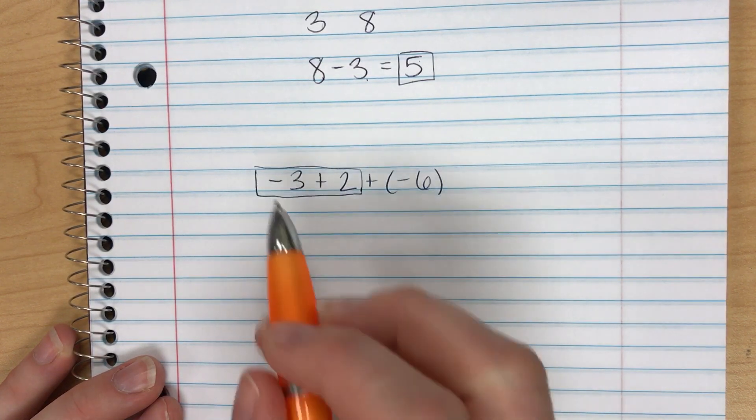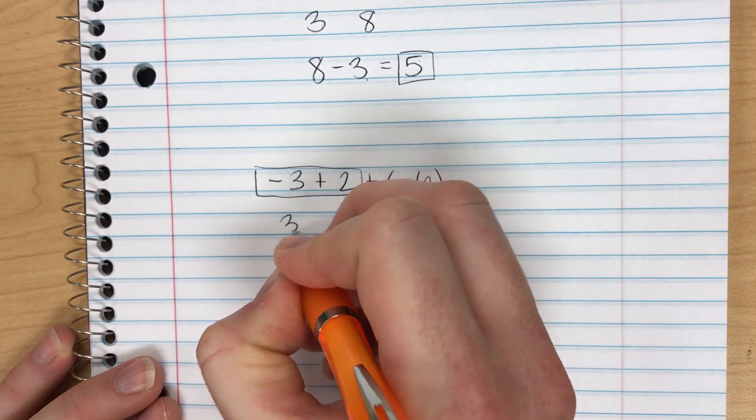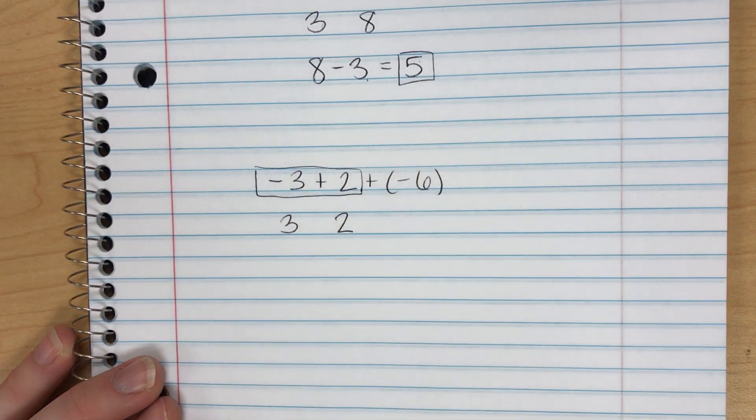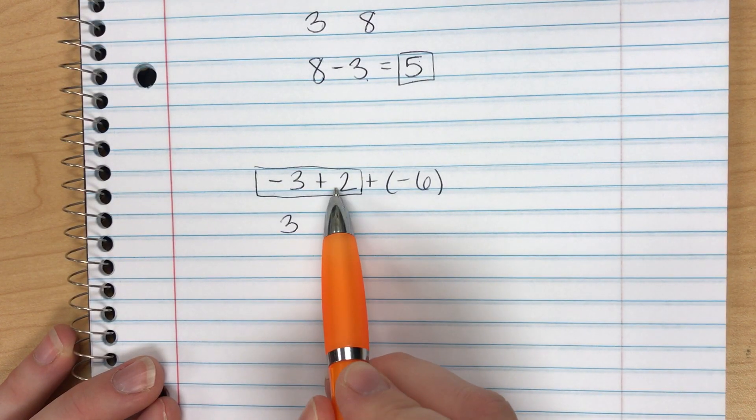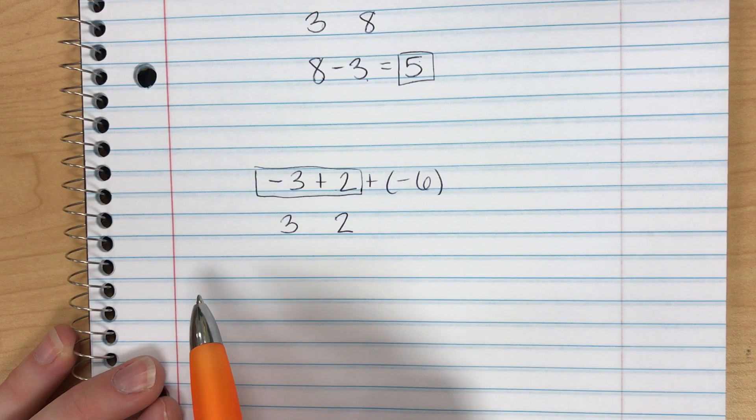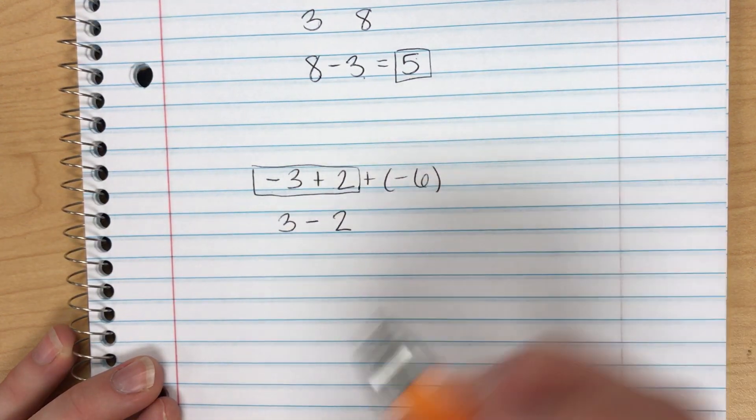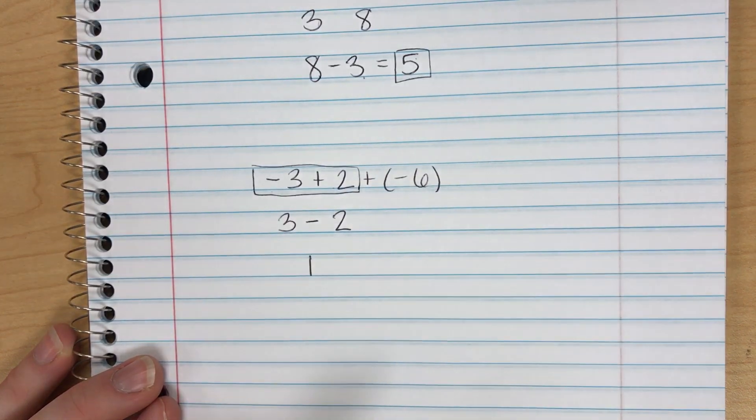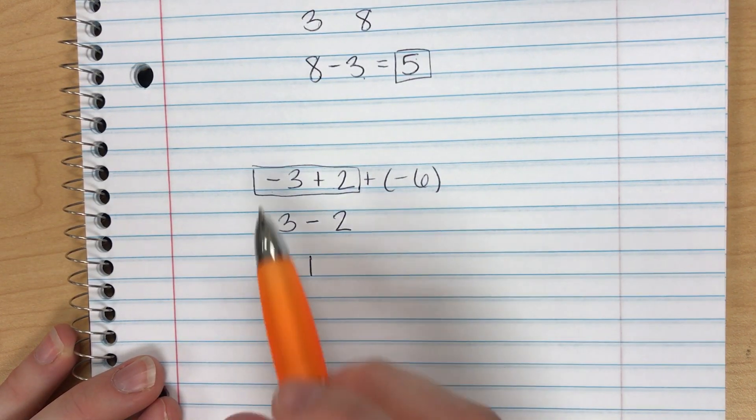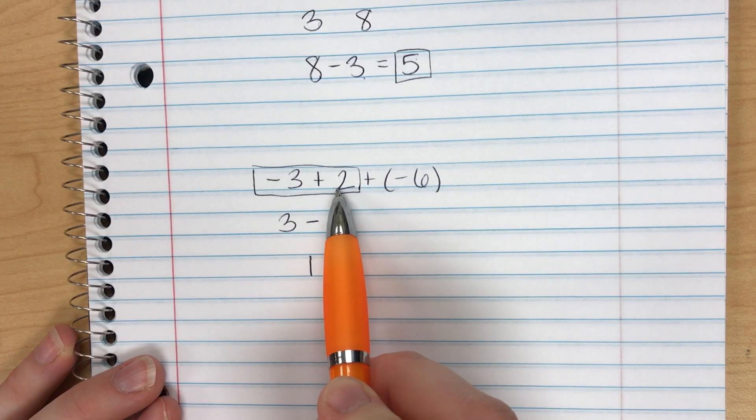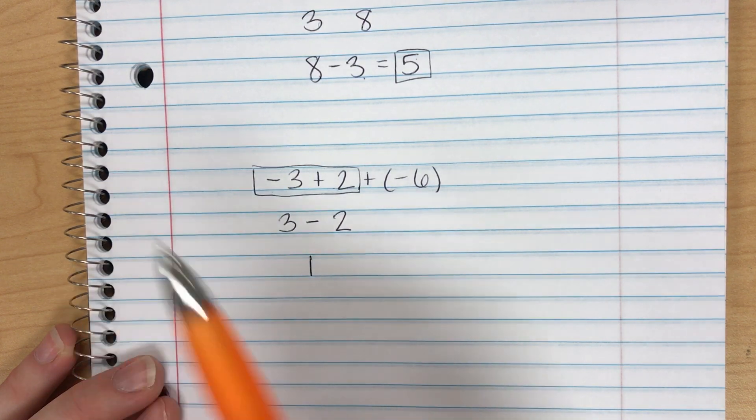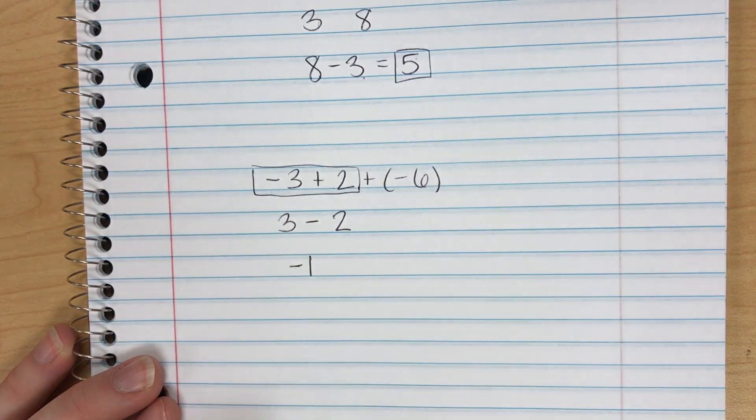The absolute value of negative 3 is 3 and the absolute value of 2 is 2. Since my signs were different I'm going to follow the rules for different signs which is to subtract and not add. So 3 minus 2 of course gives me 1. Is it going to be a positive 1 or a negative 1? We'll look back at my original values. The highest absolute value belongs to 3 and that 3 is negative. So my answer has to be negative.